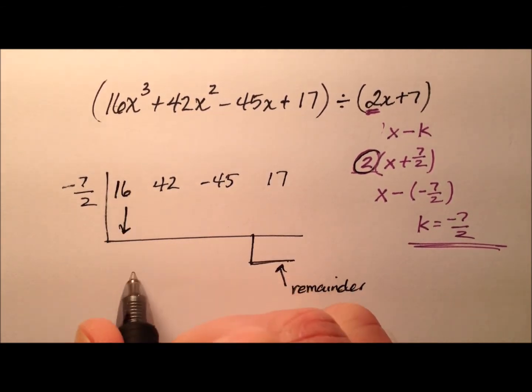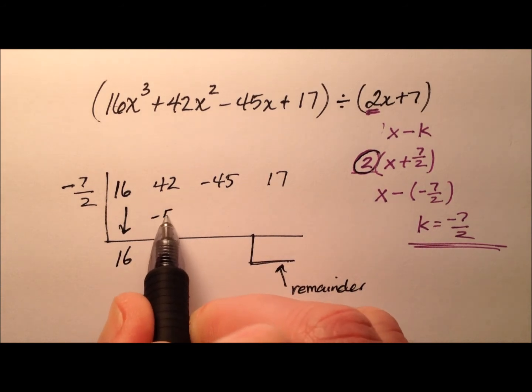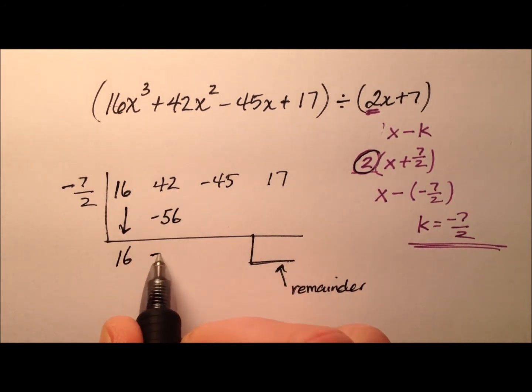Okay, so let's go ahead and bring down my first term. So 16. And then I'm going to multiply. So negative 7 halves times 16 will be negative 56. So I'll have a negative 14 here when I add this column.